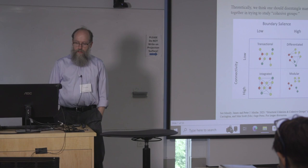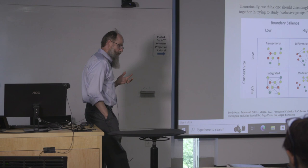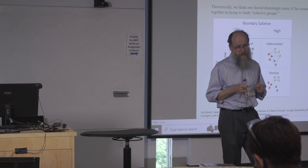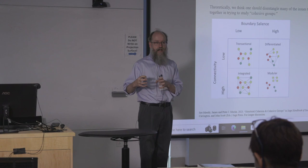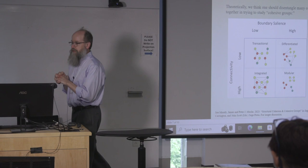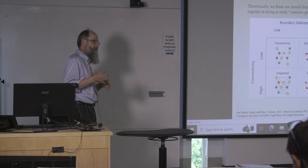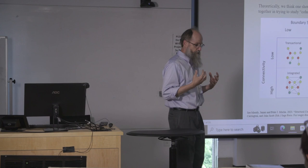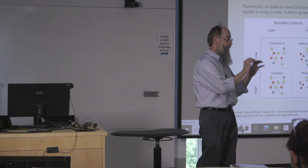Whenever you have a problem where many people are talking past each other and proposing methods, it might be that they're not talking about the same thing. For us — me, Peter, and others on this paper — there's a strong distinction between the cohesion side and the group side. There are two types of problems: a connectivity problem and a boundary salience problem. By boundary salience we mean the distinction between 'us' and 'them' — what Craig Rawlings called 'the power of the we.'